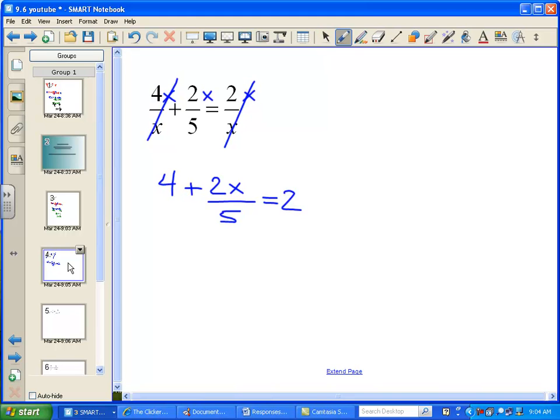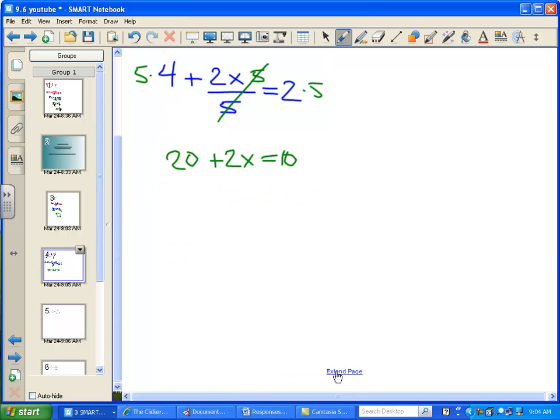Let's get rid of this 5 now. Multiply everything by 5. And you get 20 plus 2x equals 10. So now it's just a simple solve, right? We'll subtract 20 from both sides. We get 2x equals negative 10, and then to solve we'll just divide by 2. So x is negative 5.